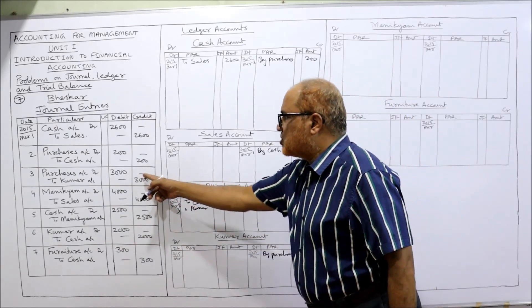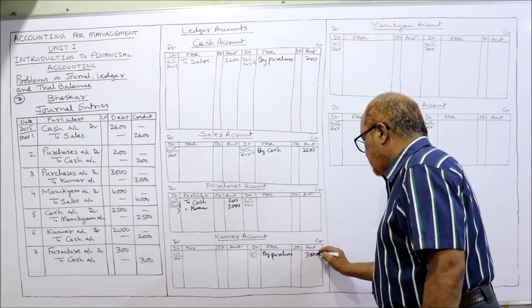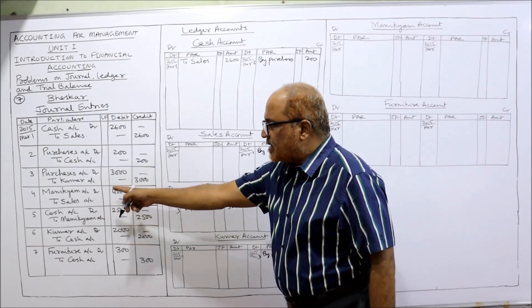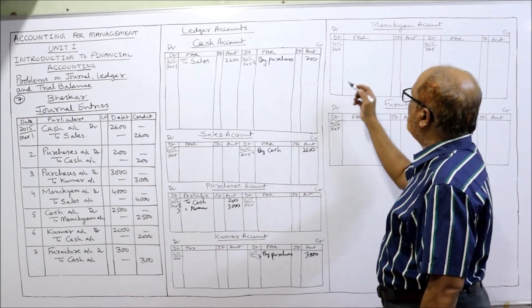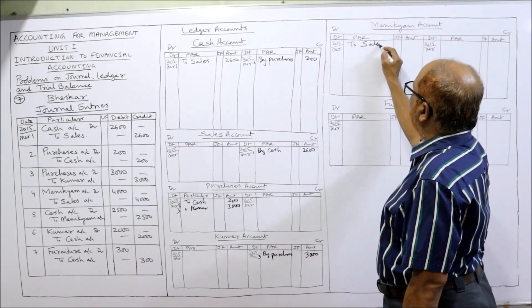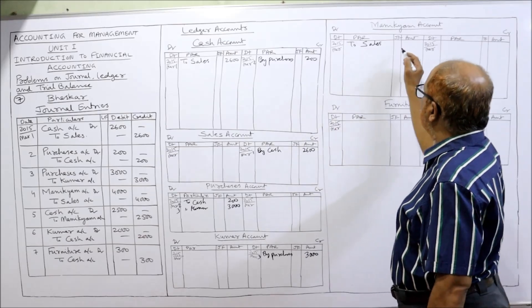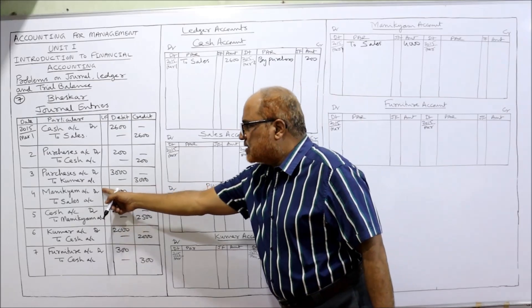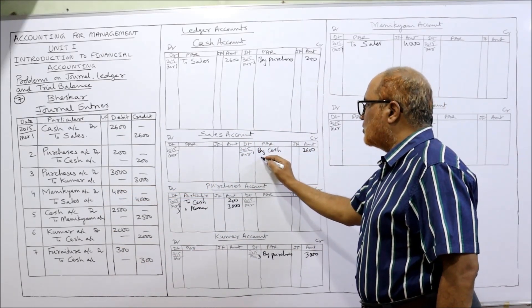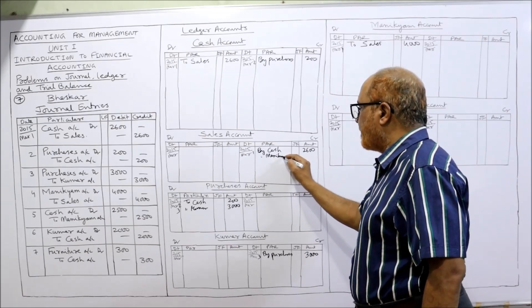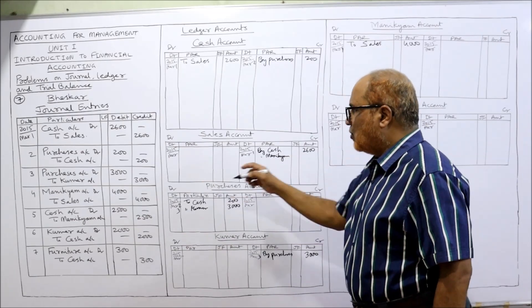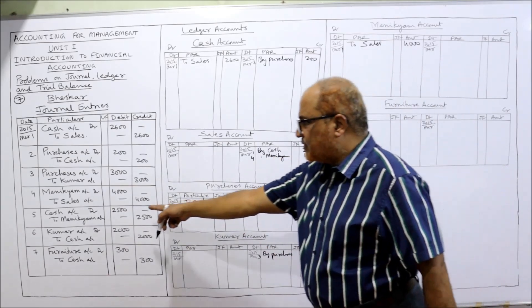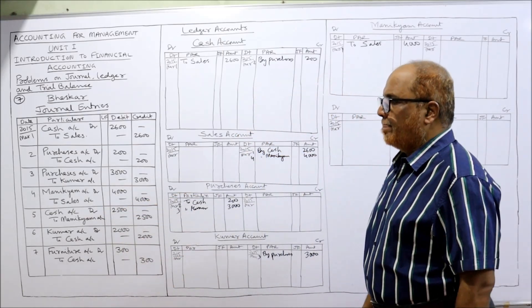Fourth transaction — Moneycam account Dr. to Sales. Moneycam account debit side: 'To Sales — 4000', date is 4th. Sales account credit side: 'By Moneycam — 4000', date is 4th.